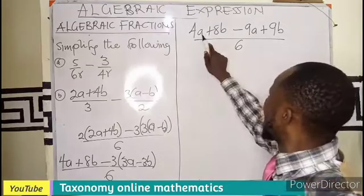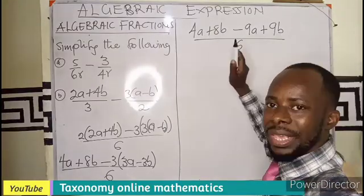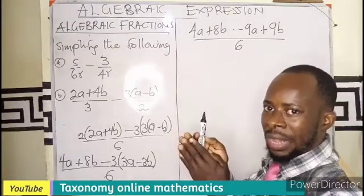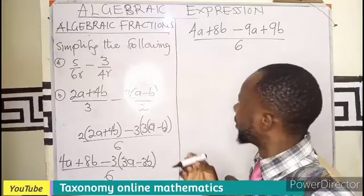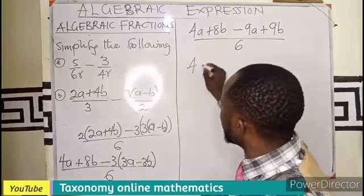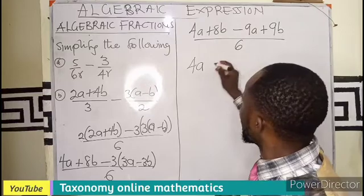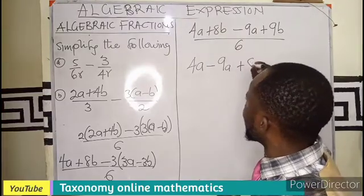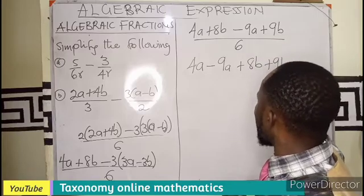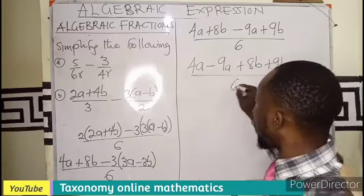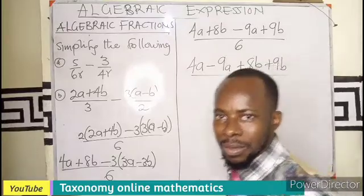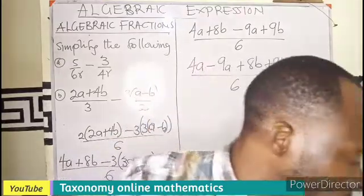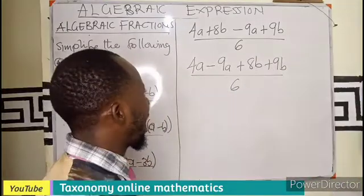A, a, b, b, like terms, we group them together maintaining their operators. So this is going to be 4a minus 9a plus 8b plus 9b all still on what? 6. So now we can get the value from there.